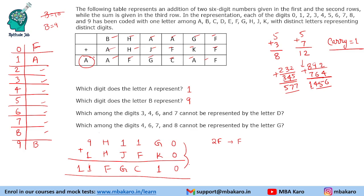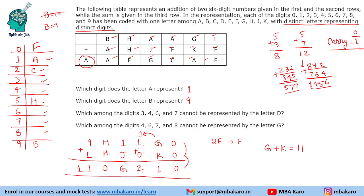With F = 0, we have 0 plus 0 giving 0. Now looking at the column: 1 plus 0 equals C. Since 1 is already taken by A and all letters represent distinct digits, C cannot be 1. The carry from the previous column must be 1, giving 1 + 0 + 1 = 2, so C = 2. Since we are generating a carry here, G plus K must equal 11. Next, H plus H gives 0 in the units position. The digit that added to itself produces 0 is 5, because 5 + 5 = 10. So H = 5.